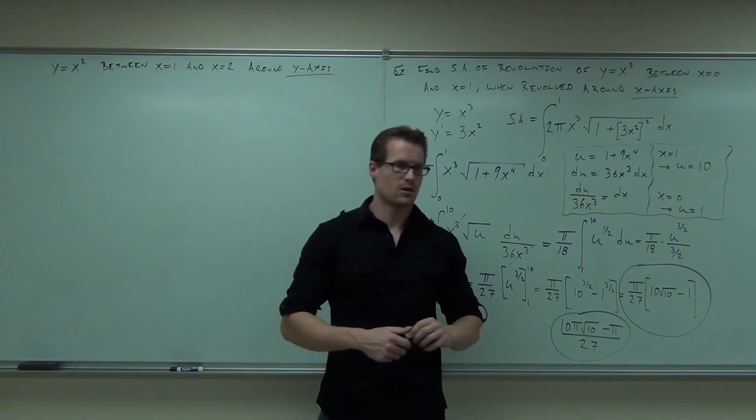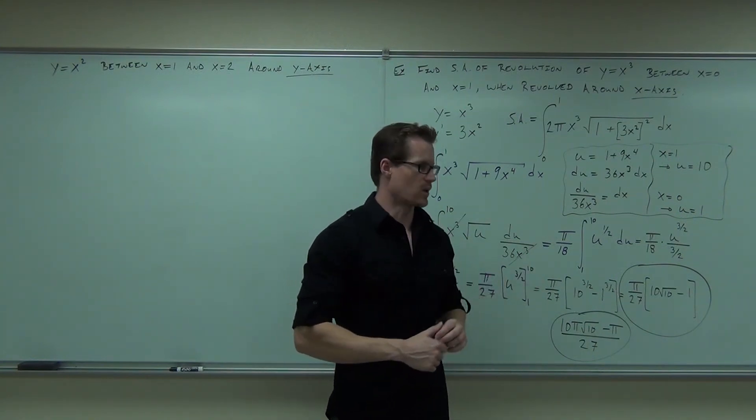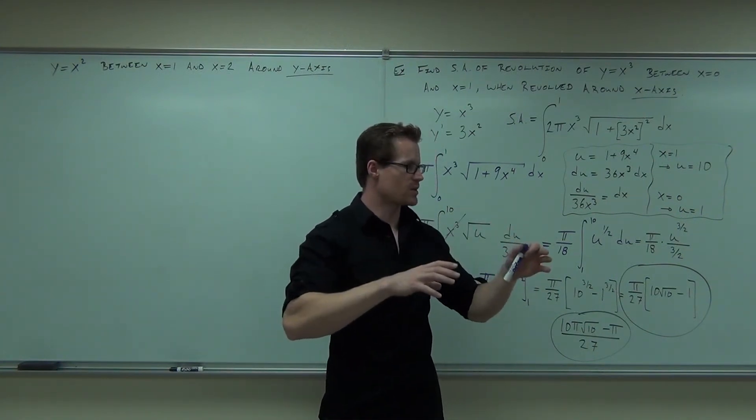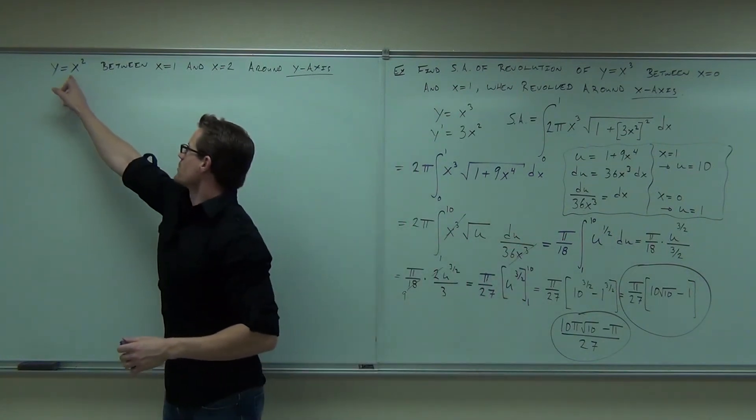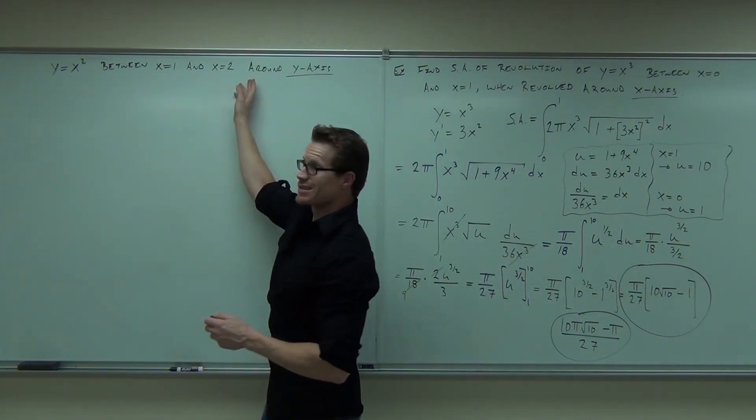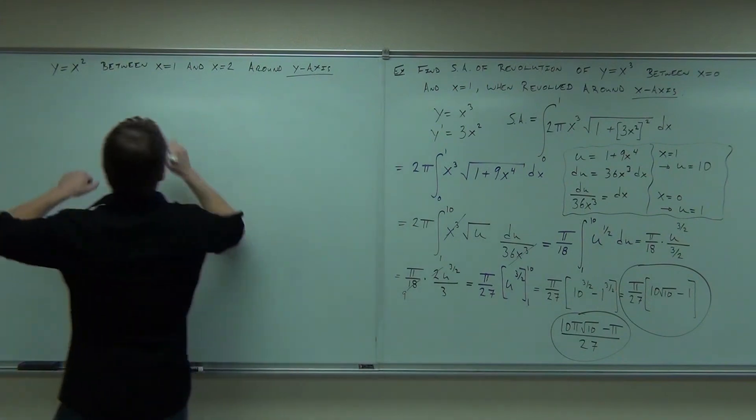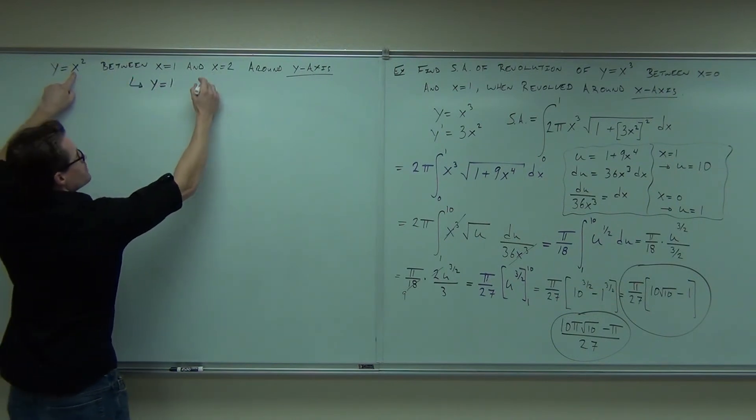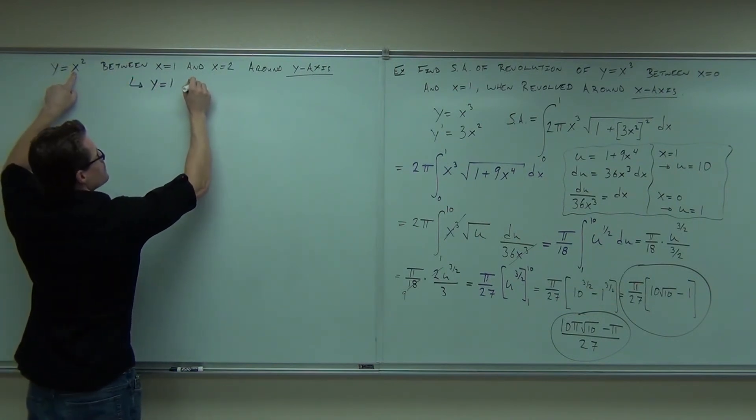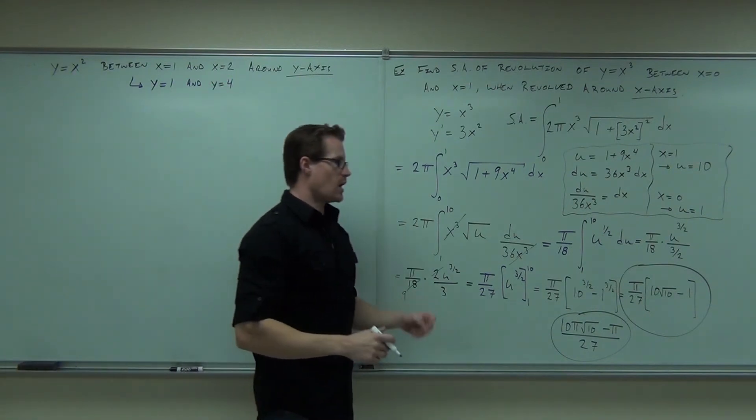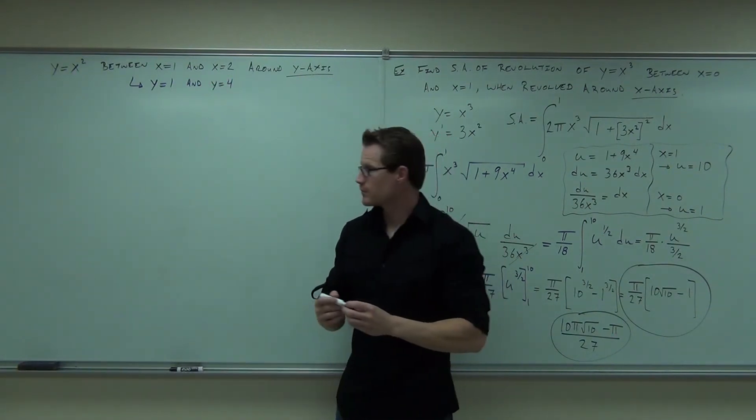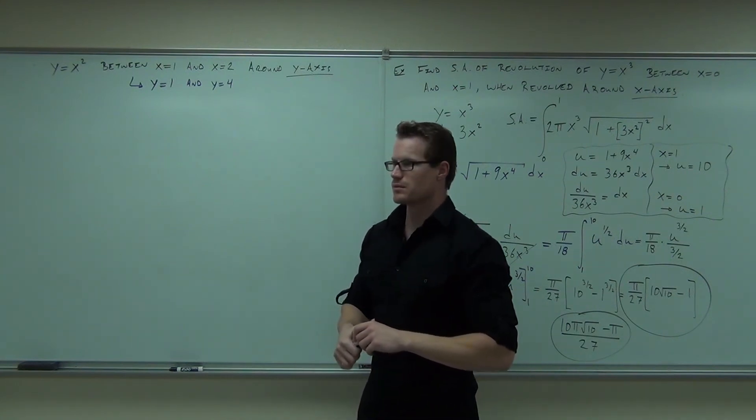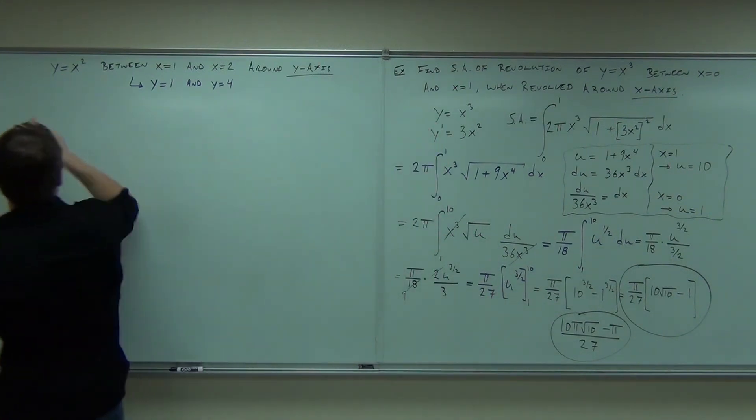Say what? y square them. Okay, great. So square them because when I plug them into my function, that's what I'm going to get. Notice it says y equals x squared. It's giving you x's. Just plug them in. If x equals 1, then y equals 1. And if x equals 2, then y equals 4. Perfect. Now we have bounds in terms of y. Still okay? All right. Let's continue.